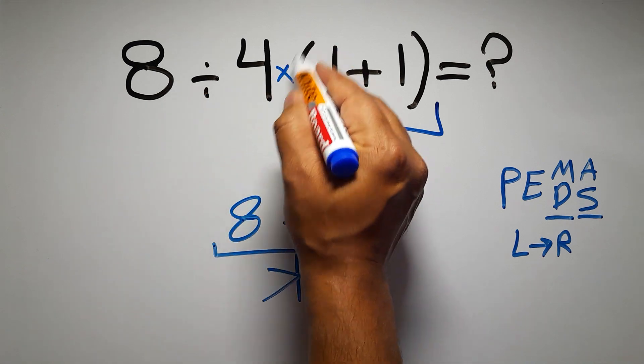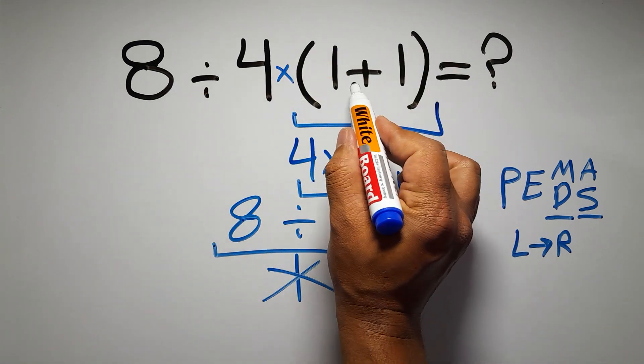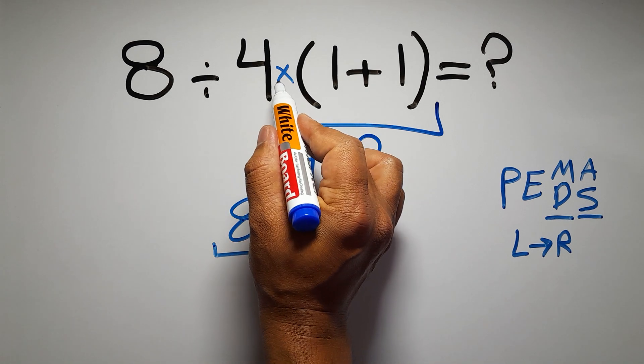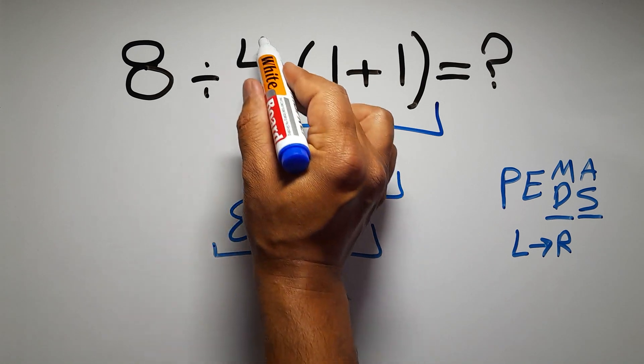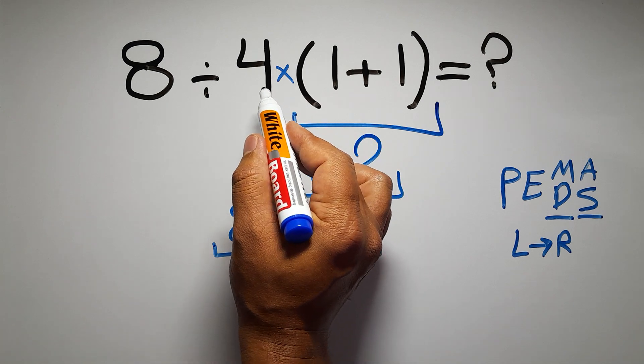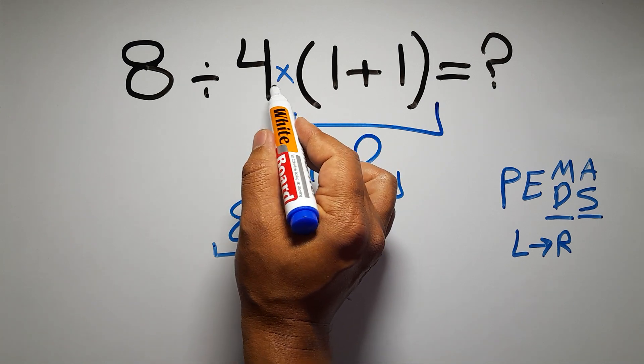In this expression we have one division, one multiplication, and one parentheses. Inside this parentheses we have one addition. Here we have a multiplication because in mathematics when a number is placed next to parentheses it means multiplication, and we usually don't write a multiplication sign for brevity.